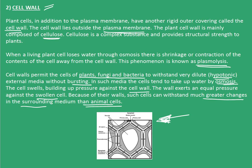Cell walls permit cells of plants, fungi, and bacteria to withstand very dilute external media without bursting. In such media, the cells take up water by osmosis, swell, and build up pressure against the cell wall. The wall exerts an equal pressure against the swollen cell, allowing these cells to withstand much greater changes in surrounding medium than animal cells. The picture here shows a typical plant cell and its cell wall structures. With this, we come to the end of the first video on this chapter.